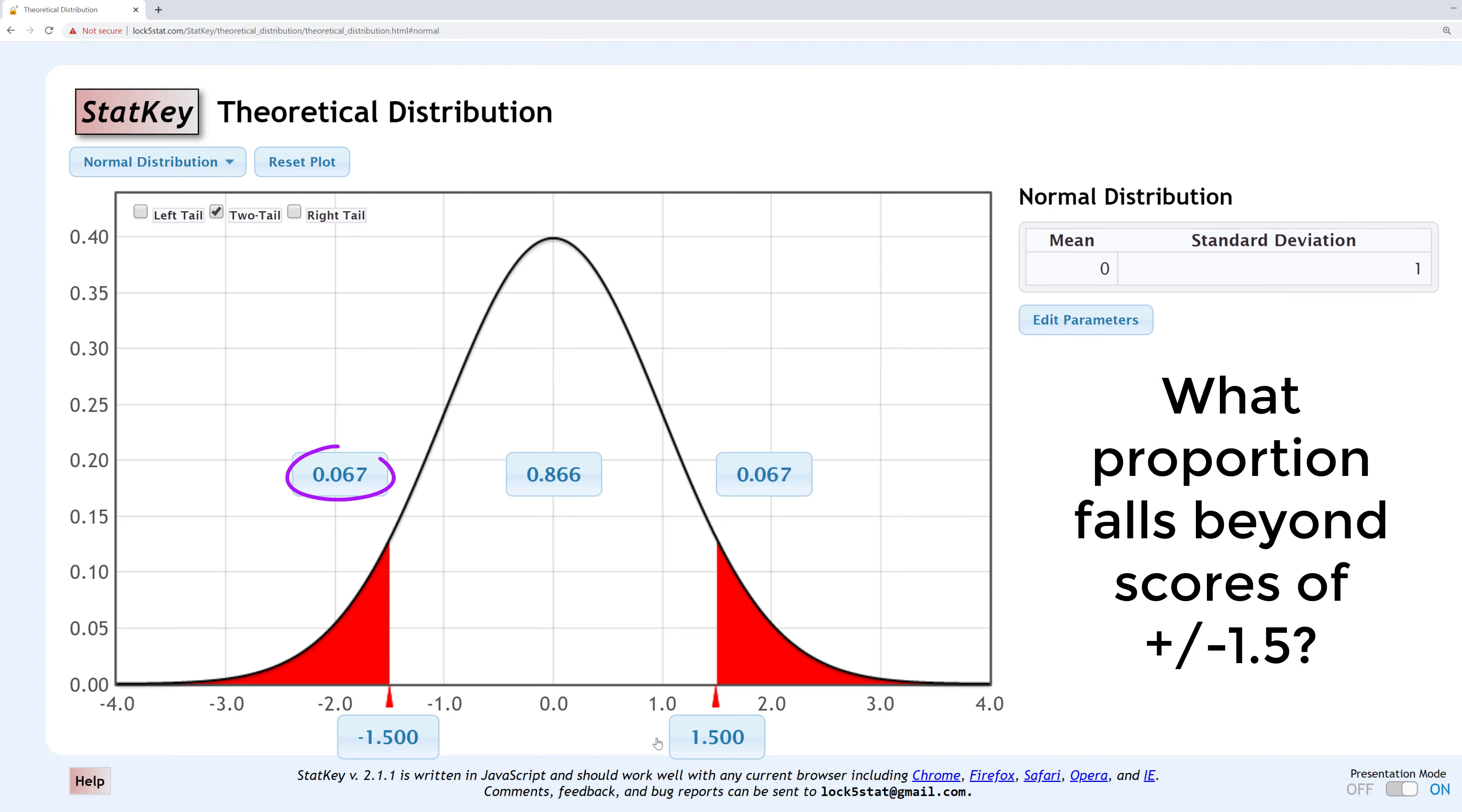The area in each tail is 0.067. To find the total area in the tails, I add 0.067 plus 0.067, which is 0.134. The total area beyond Z-scores of plus and minus 1.5 is 0.134.